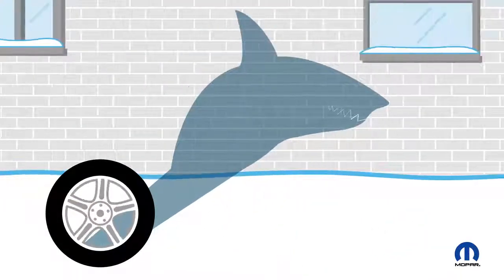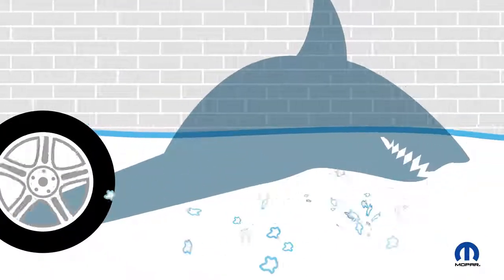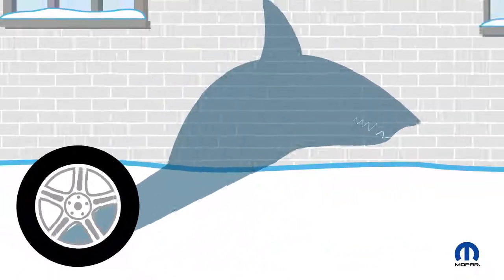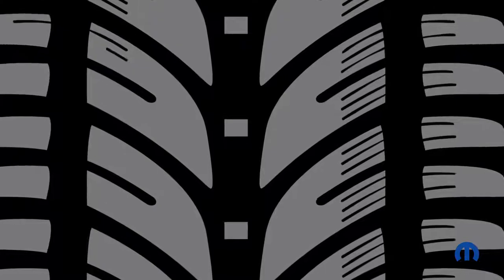Number three: Biting groove edges. Jagged surfaces designed to chew through snow and ice for better control. Number four: Variable thickness sipes. Hairline cuts in the tread that increase surface contact for enhanced performance in the cold.